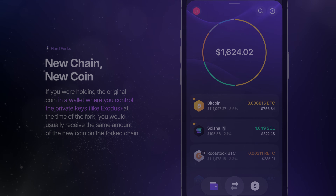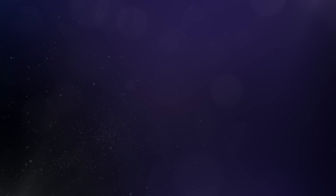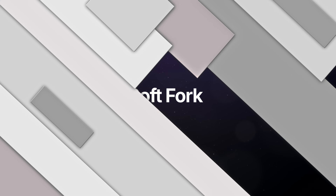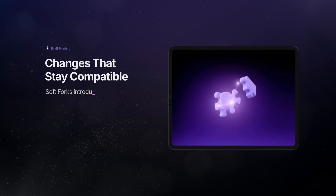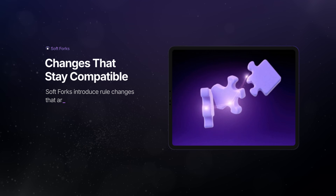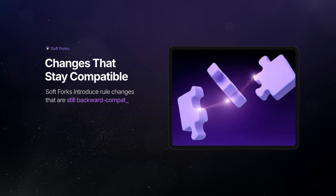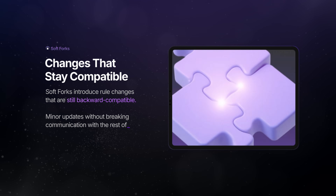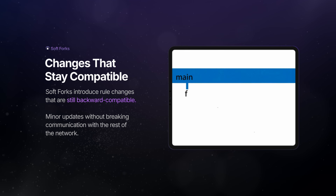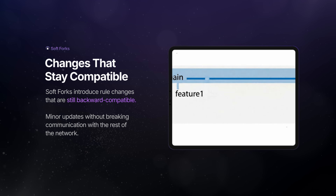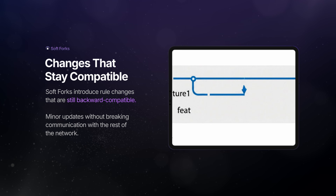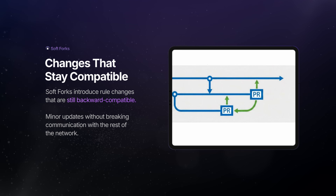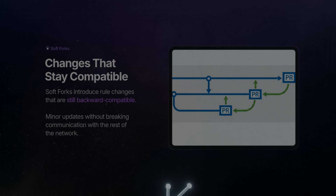But not every update creates a split. There's also the soft fork. Unlike a hard fork, a soft fork introduces rule changes that are still backward compatible. Think of it like a minor update, where the rules are tightened or new features are added, without breaking communication with the rest of the network.